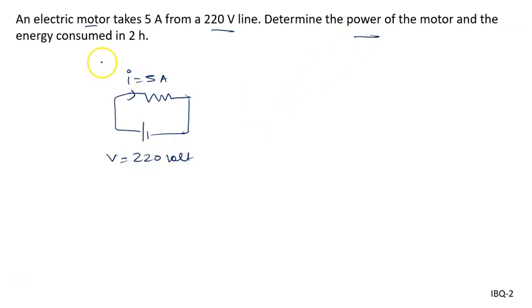We have to calculate the value of the power and the energy consumed. The time for the consumption of the energy is given to us as 2 hours. We know power can be calculated directly by the formula V into I.